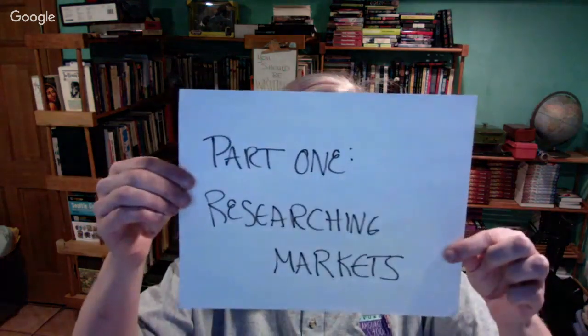First, let's talk about researching markets — that's pretty important. Where do you find the markets you're going to be sending short stories to? Hopefully you're already reading short stories in the genre you're submitting to. There are also some places to search: one is the Submission Grinder — I'll include the link — another is Ralan.com, and another is Duotrope. The first two are free; the third is paid. If you use one of the first two, please consider kicking them a few bucks.